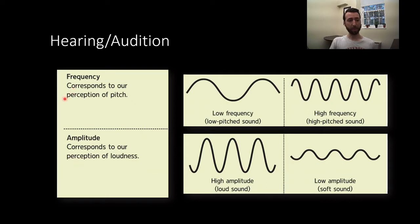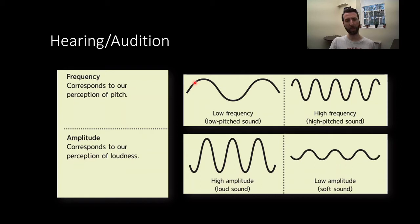The frequency of a waveform corresponds to our perception of pitch. A low-frequency waveform with slow oscillation and lots of distance between the peaks will sound like a low-pitched sound. Frequency is the physiological quality — how frequent are the waveforms — and pitch is the psychological quality, how high-pitched or low-pitched the sound is to us.